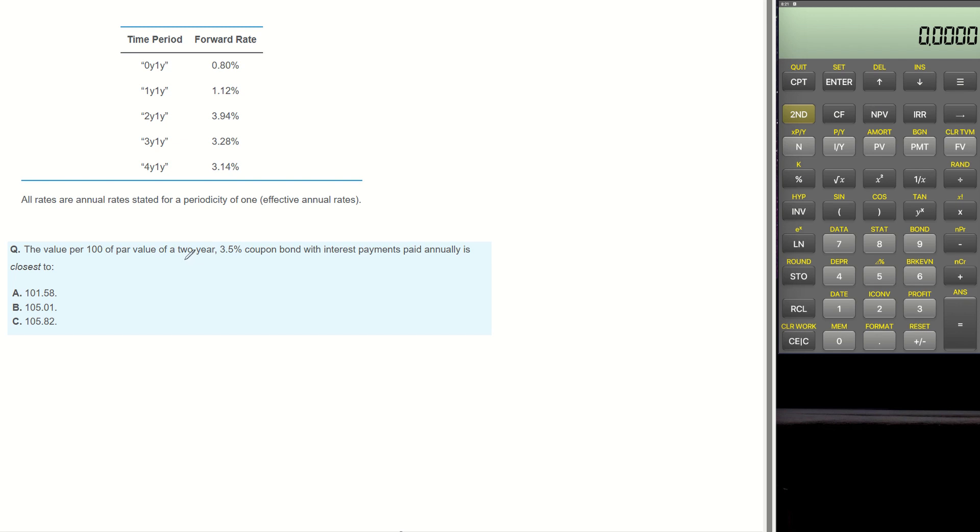We want to know the present value of a bond with 2-year 3.5% coupon rate, and forward rate is provided. From here, we can calculate spot rate.